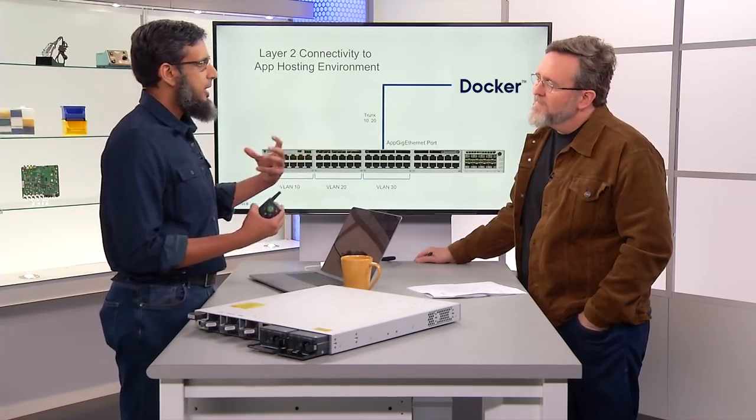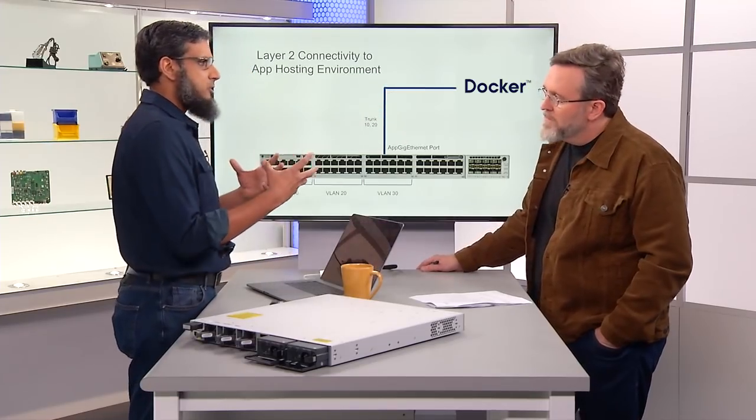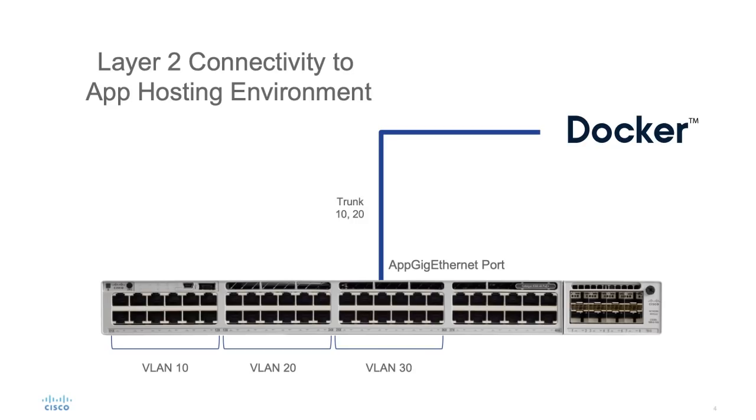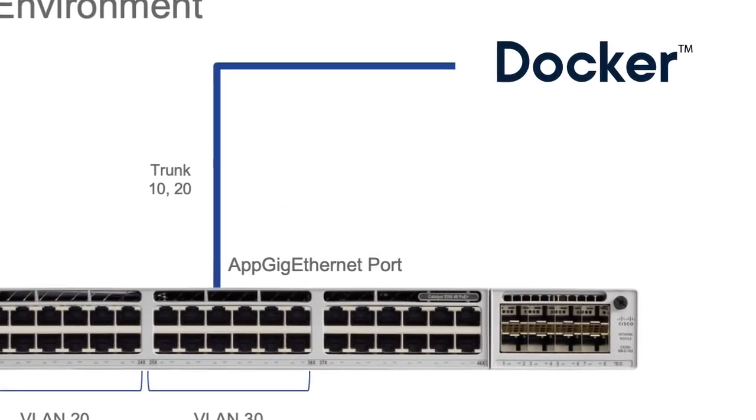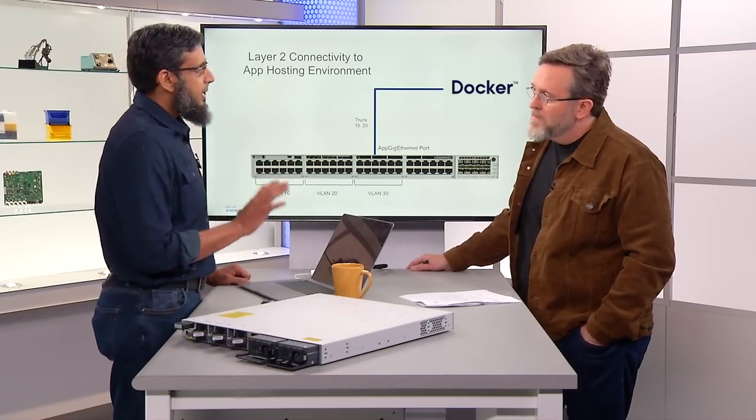Now, how do we actually connect the Docker application to the switch? It's all virtual, but to make it easy to understand — the application has a virtual Ethernet interface, and that gets connected to what we call an app gigabit Ethernet port. This is a one-gig port dedicated for the application, so you can stream up to one gig there. It's L2 connectivity, which means you can take multiple VLANs in there. Different types of applications will have different requirements — some can run with just one port, some will require multiple ports, but you can trunk all of them with this port. Once we go to DNA Center, I'll show you how it works.